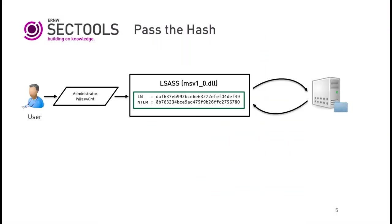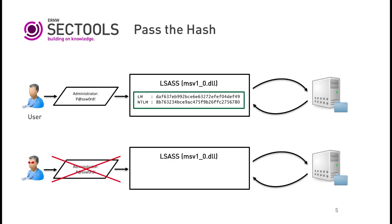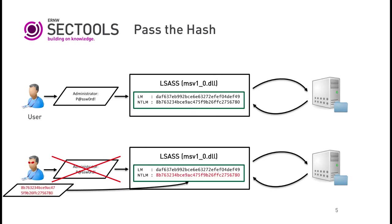Pass the hash: the user enters credentials, the LSASS process generates hashes and sends them to the server, and the server compares hashes and authenticates the user. Pass the hash means an attacker does not know the real password, so he steals the hash from the client, sends the hash directly to the server, gets authenticated, and finally has access to the resources of the hijacked user.